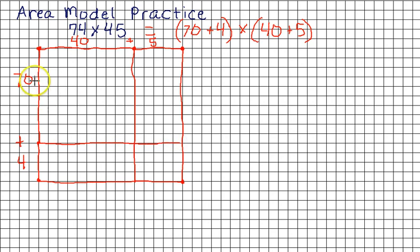Alright, then don't forget to put what goes inside your model. So 70 is multiplied here and here. 4 is multiplied here and here. And then we take the numbers on top. 40 is multiplied here and here. And then 5 is multiplied here and here. And that keeps your information straight as to what you are multiplying.